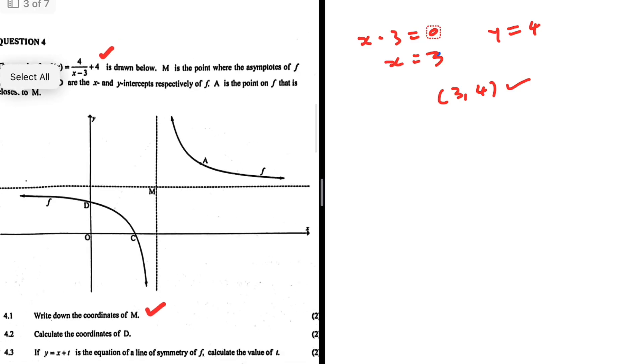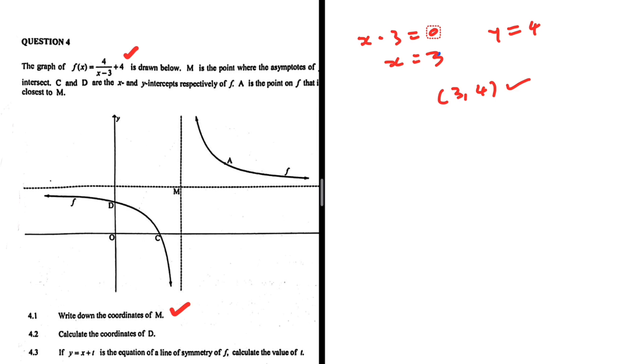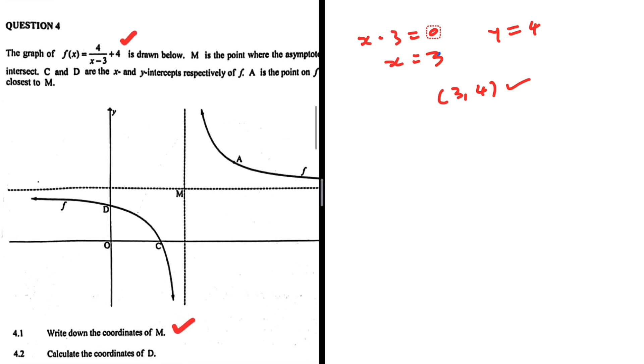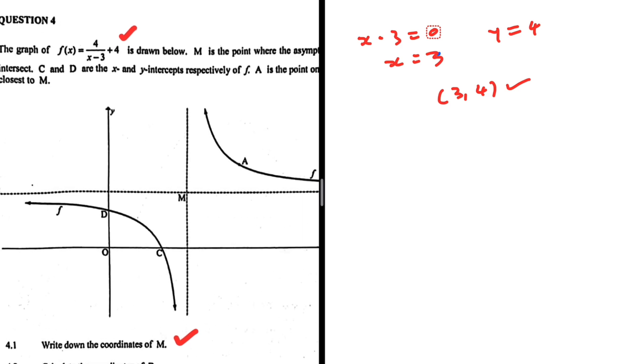M is the point where the asymptotes of F intersect. C and D are the x and y intercepts of F respectively. So D is the y intercept of F. And we know that y intercept, x equals 0.